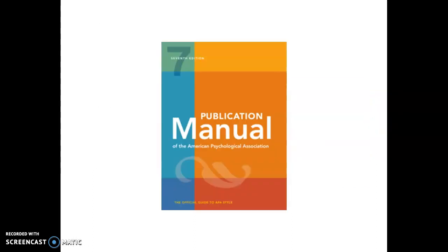There are lots of different citation styles — hundreds. The three main ones are MLA, APA, and Chicago/Turabian. We're obviously talking about APA. APA style is laid out in the Publication Manual of the American Psychological Association, 7th edition. You don't really have to buy a copy — you can borrow it from your library. But really, you may not even need this book at all because there are a lot of other resources available to you to help with citation.